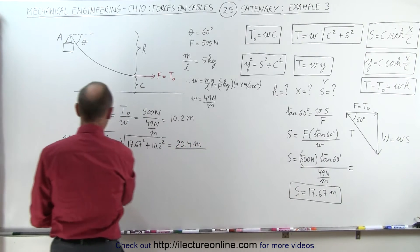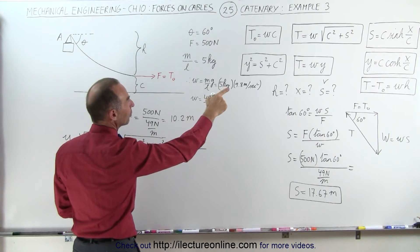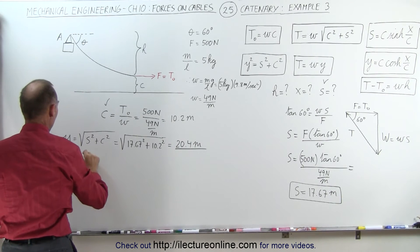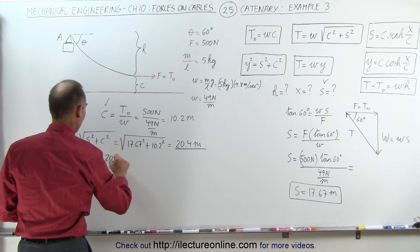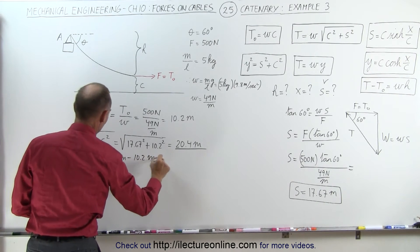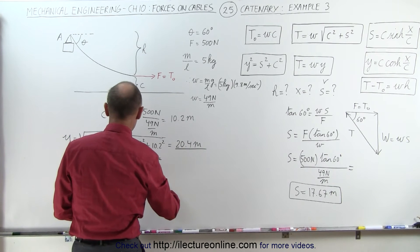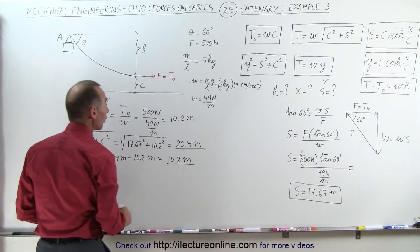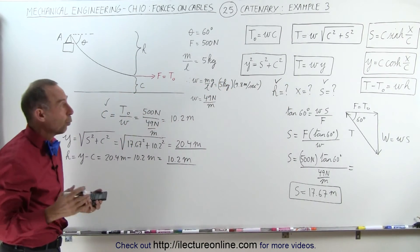The value for y is 20.4 meters. Since c equals 10.2 meters, that allows us to find h. We can say h equals y minus c, which is 20.4 minus 10.2 meters. It turns out h is exactly equal to c — h = 10.2 meters.